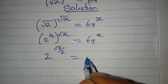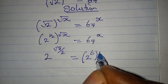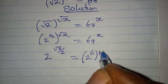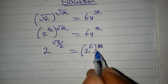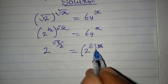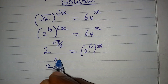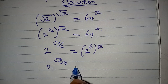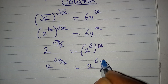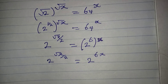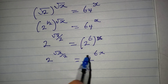On the right-hand side, 64 is 2 to the power of 6, with x outside. We can multiply the powers, giving us 2 to the power of 6x. Now we have the same base on both sides.